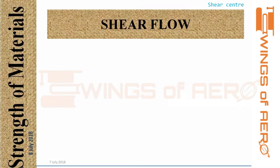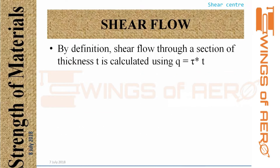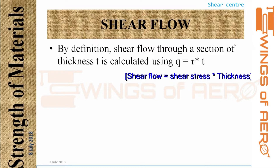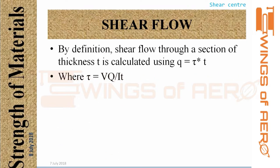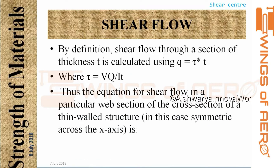First, I will cover shear flow. Shear flow is denoted by the letter Q. Shear flow through a section of thickness is calculated using the product of shear stress and the thickness: Q equals tau into T. Shear stress tau equals VQ divided by IT. I will come back to what V, Q, and I mean in the later part of the section, but remember this formula.